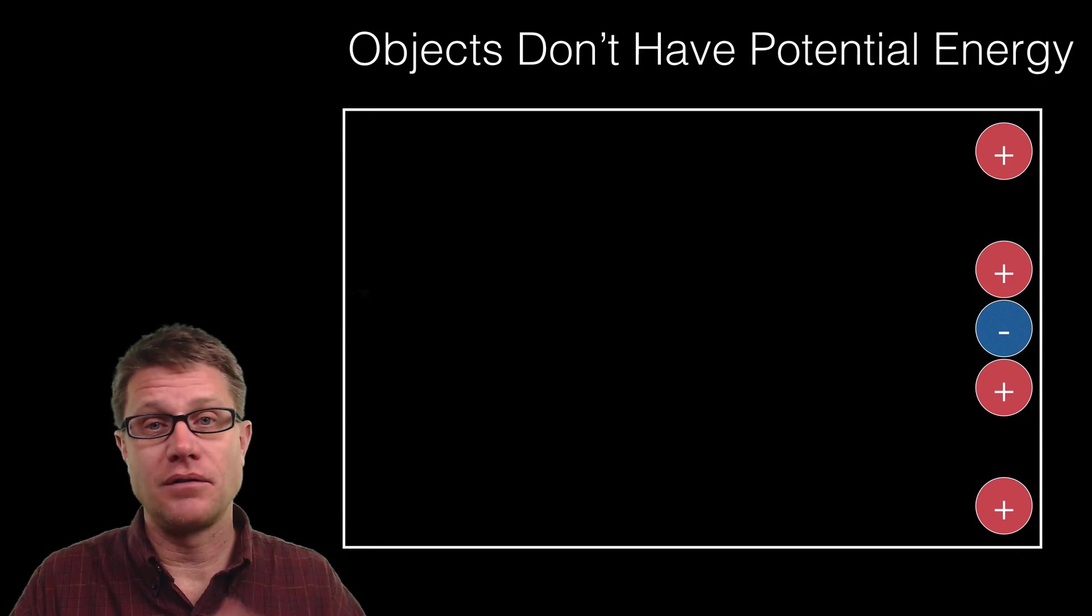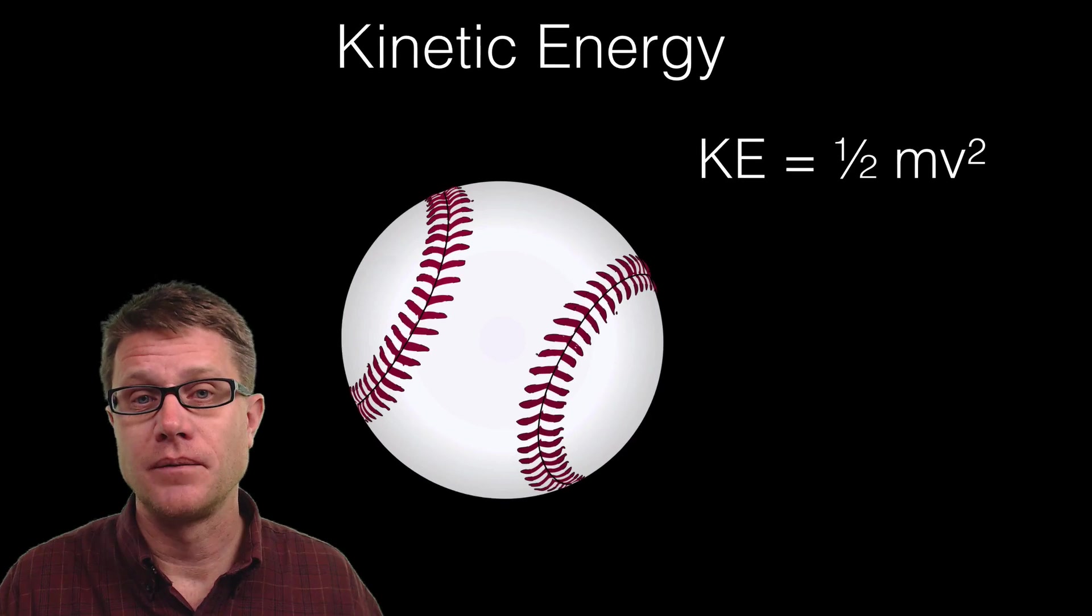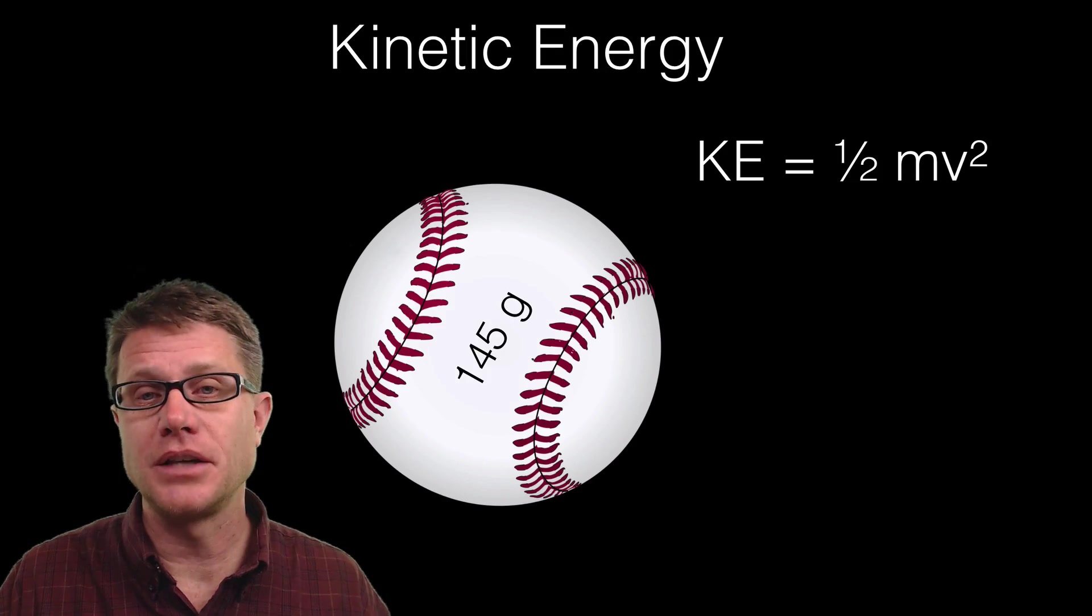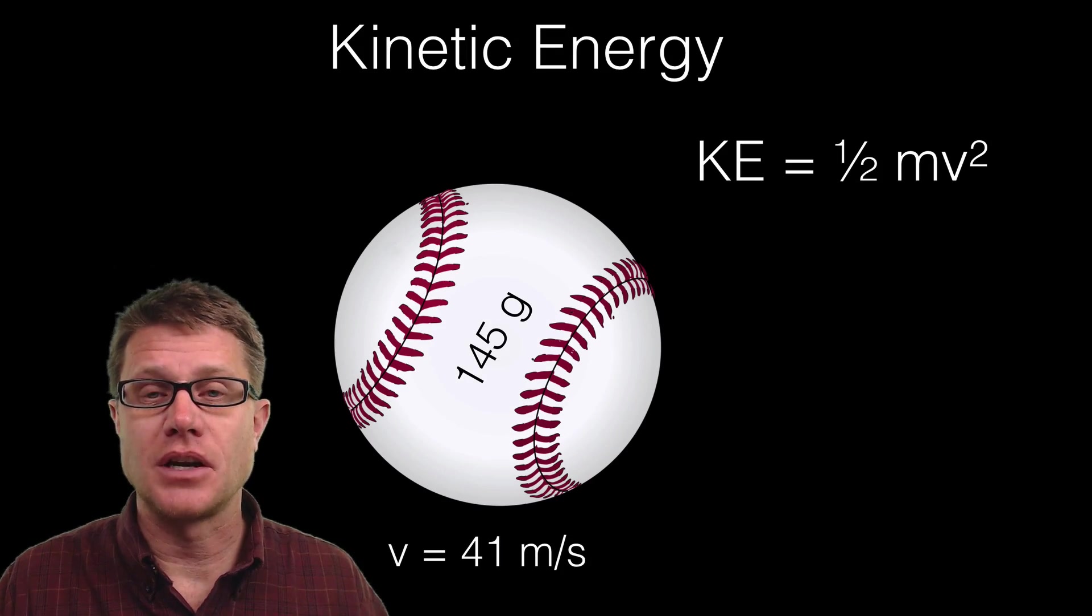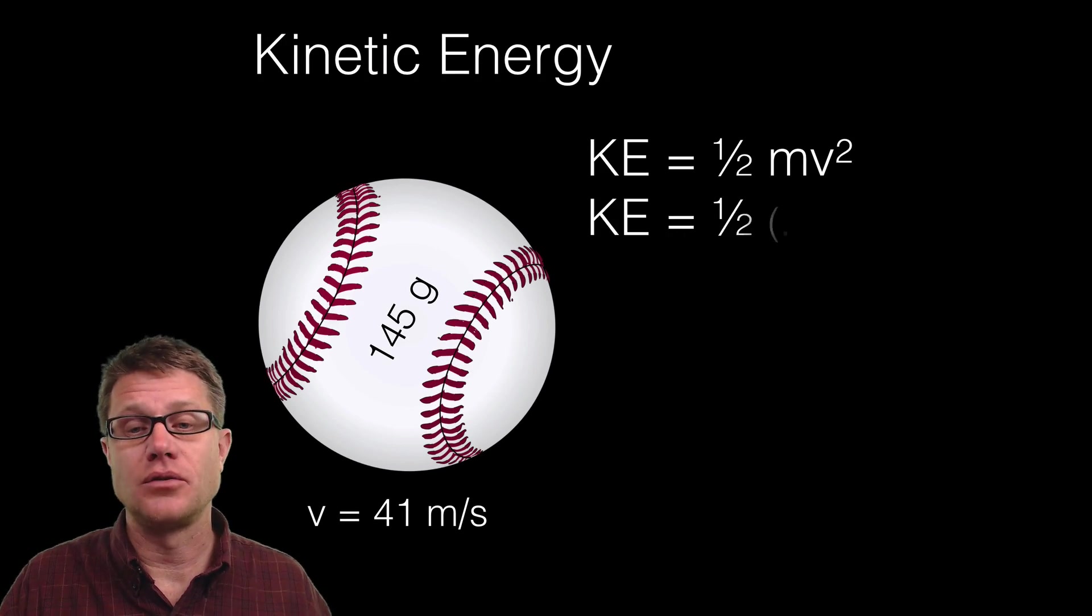If we know the mass of the object and the velocity we can figure out its kinetic energy. And the equation is pretty straightforward. If I were to pitch a baseball at around 90 miles an hour. So a baseball weighs around 145 grams. 90 mile an hour pitch is going to be 41 meters per second. So I essentially add those values to my equation.